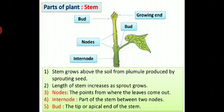Nodes: the points from where the leaves come out are known as nodes. Internode: part of the stem between two nodes is called internode. Bud: the tip or apical end of the stem is known as bud.